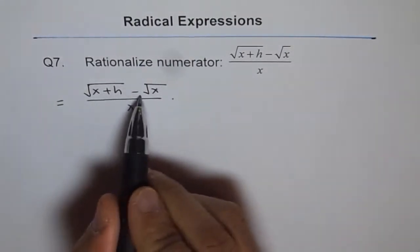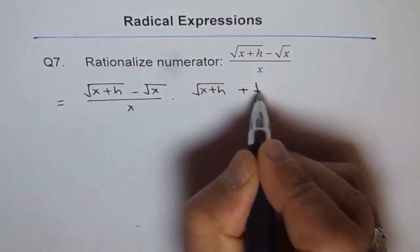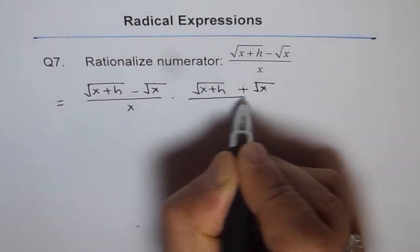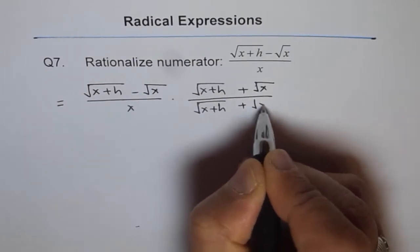We're multiplying and dividing by its conjugate, which is square root of x plus h plus square root of x divided by square root of x plus h plus square root of x.